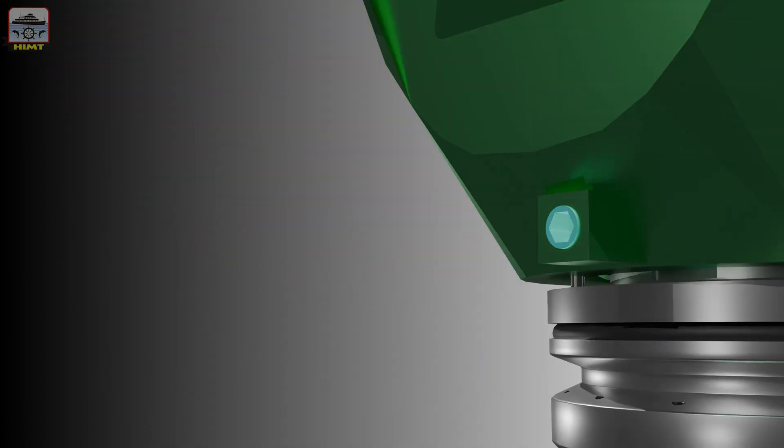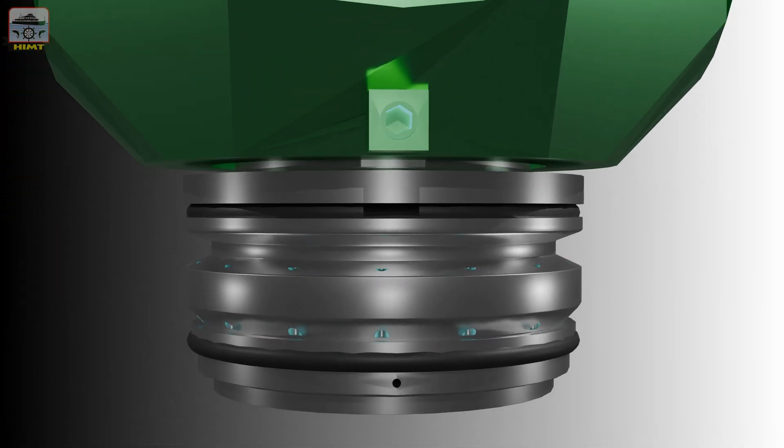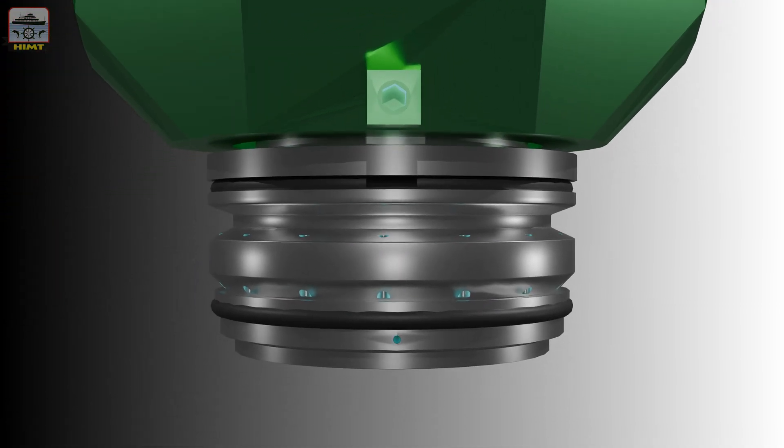The valve seat is fitted to the bottom of the housing by two Allen screws. Cooling water flows around the valve seat. The valve seat is provided with drilled holes in its circumference for improving the cooling.